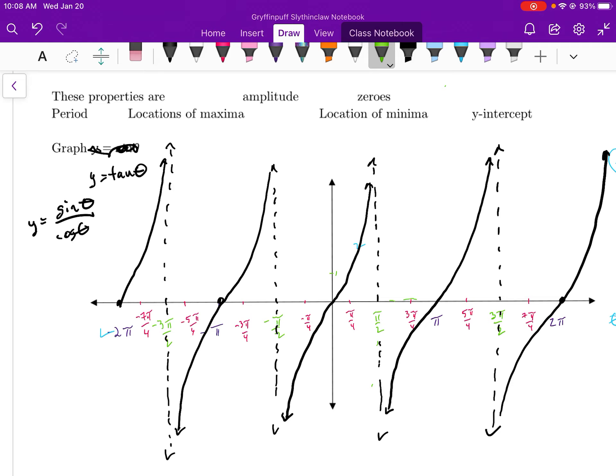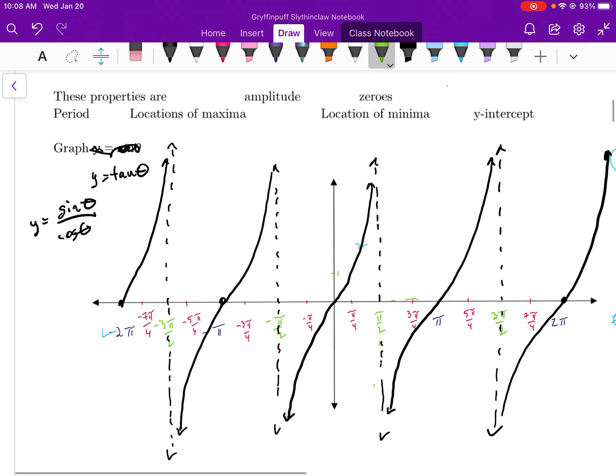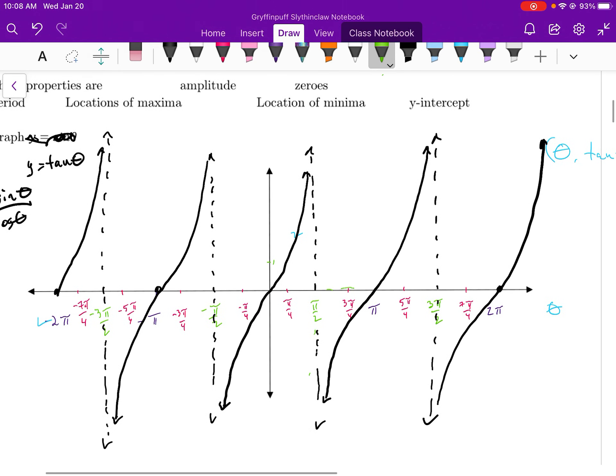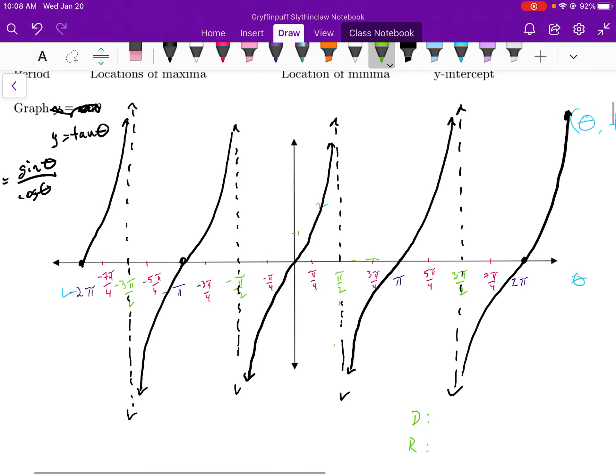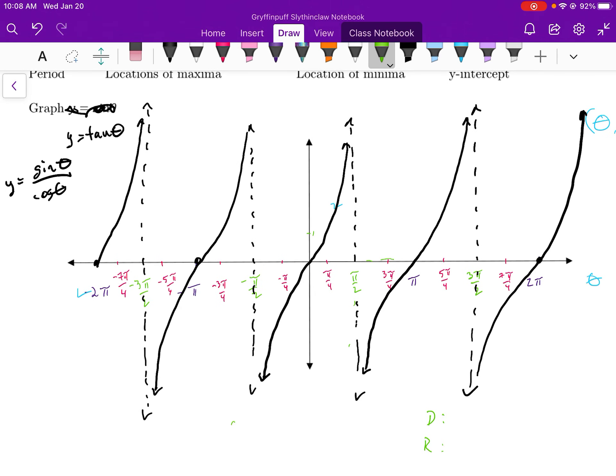And as you approach pi over two, the tangent value gets extraordinarily high and goes towards infinity. So the domain for the tangent curve is—I will write this—I'm just going to write the domain and range.